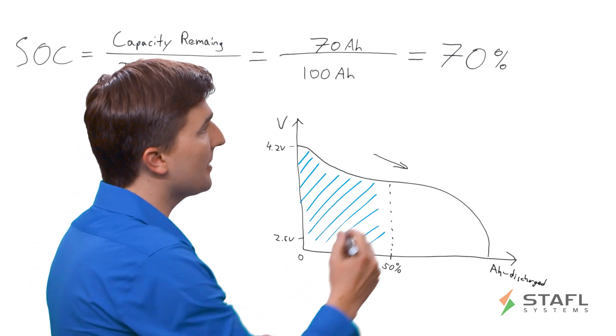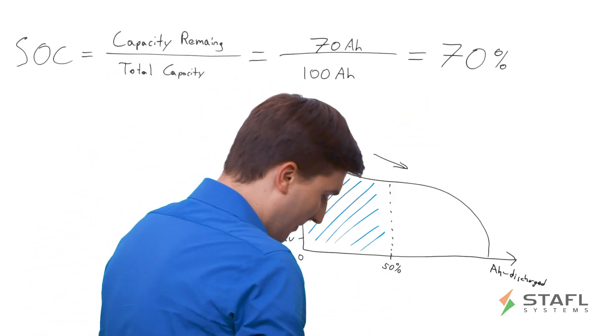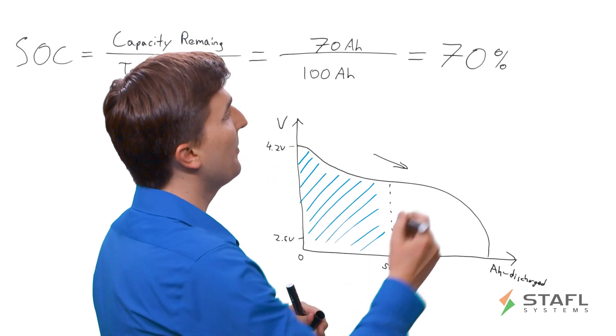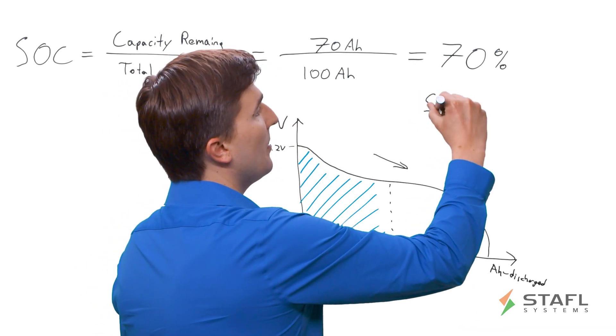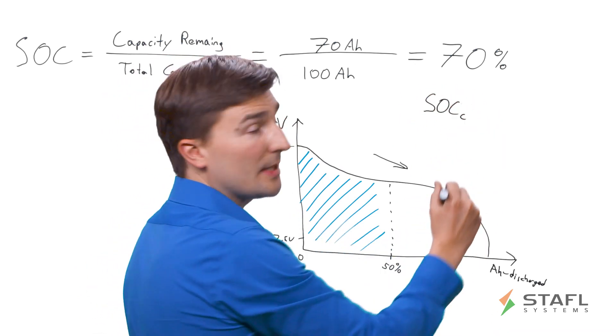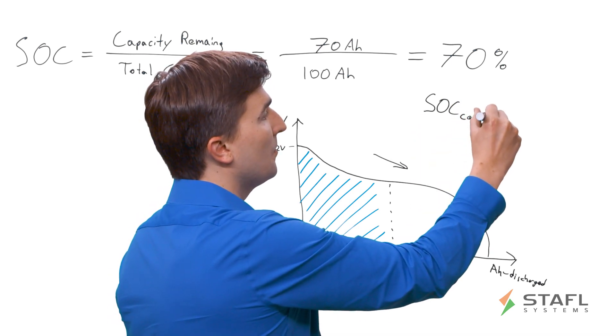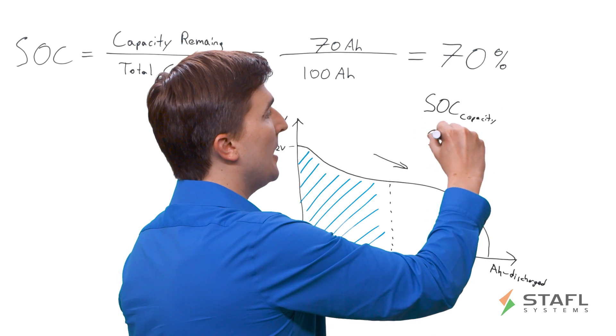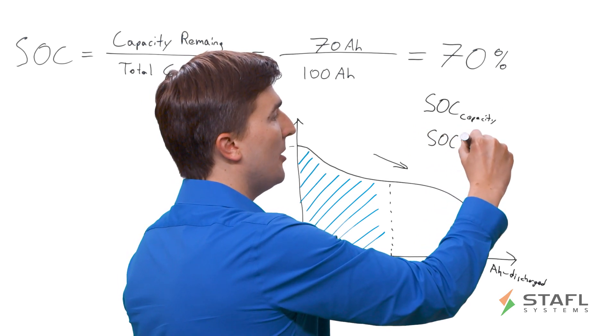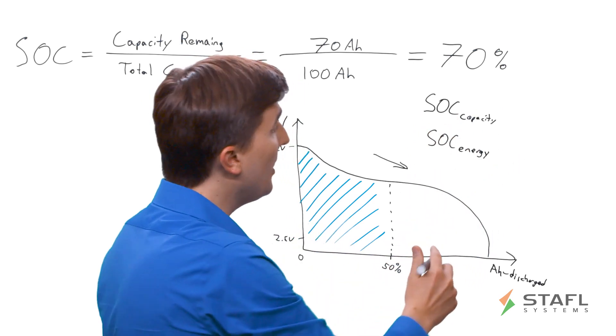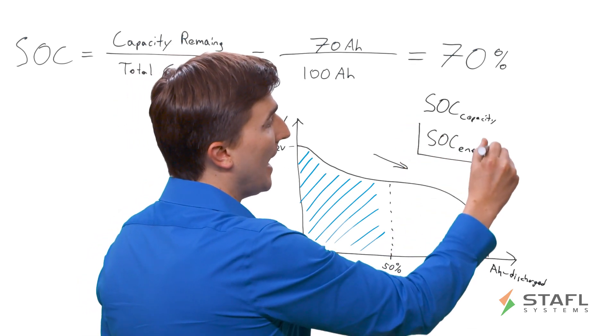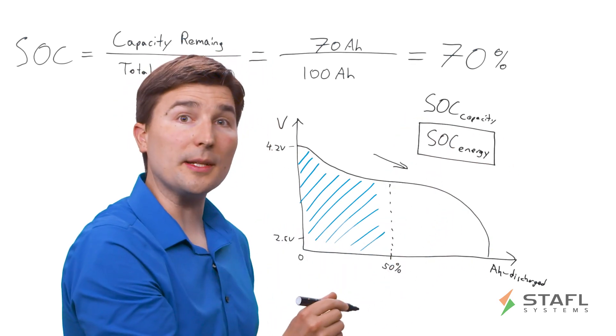So we denote this as follows. SOC C for capacity, or SOC E for energy. And these are different.